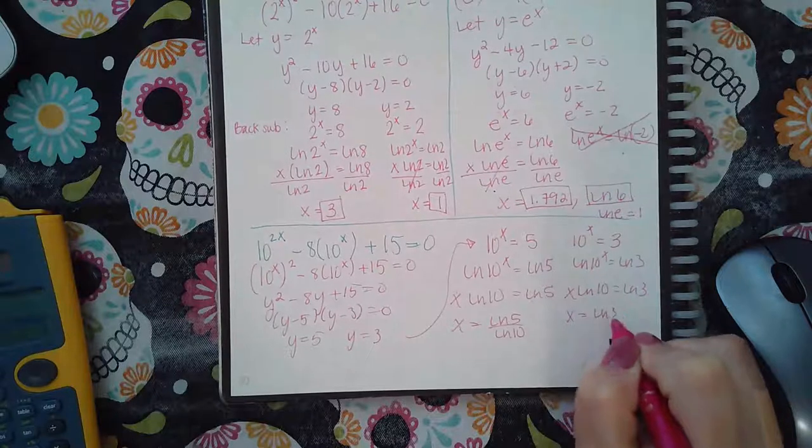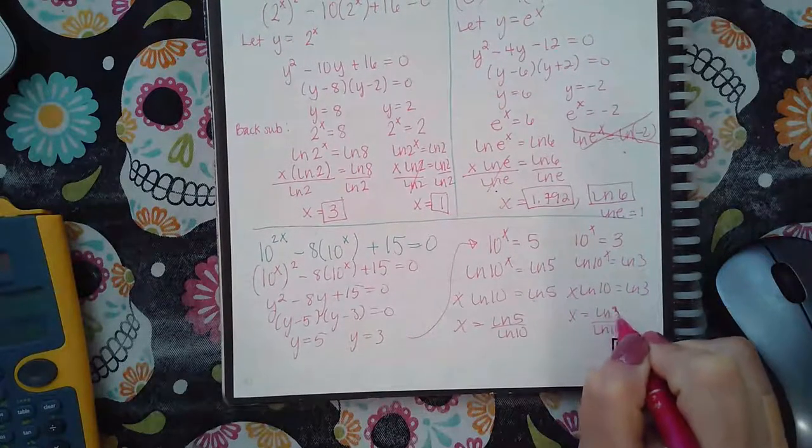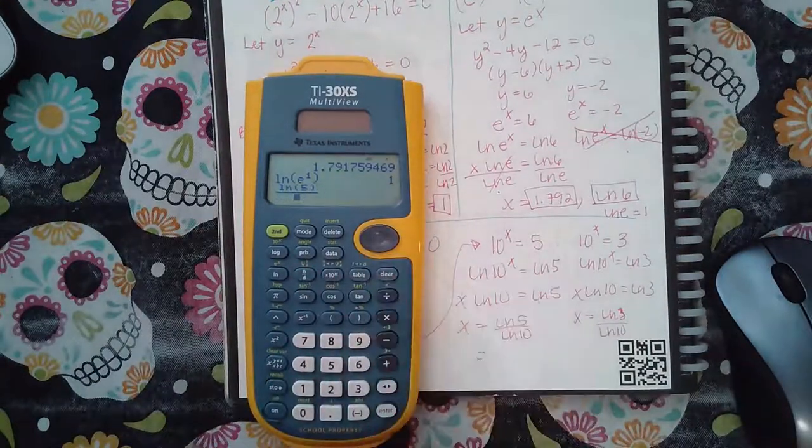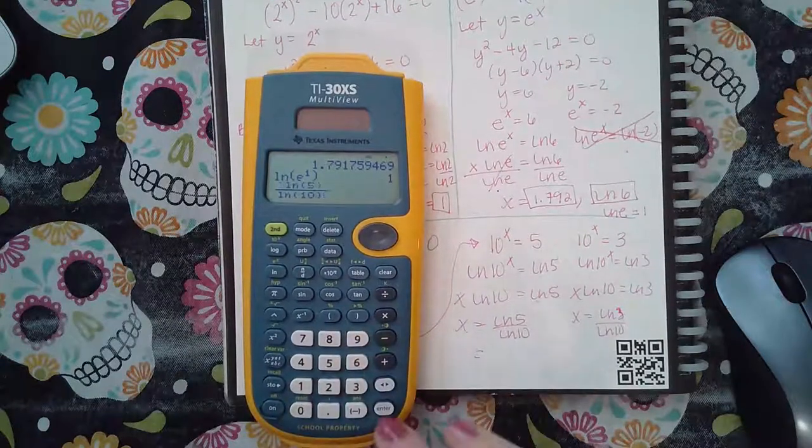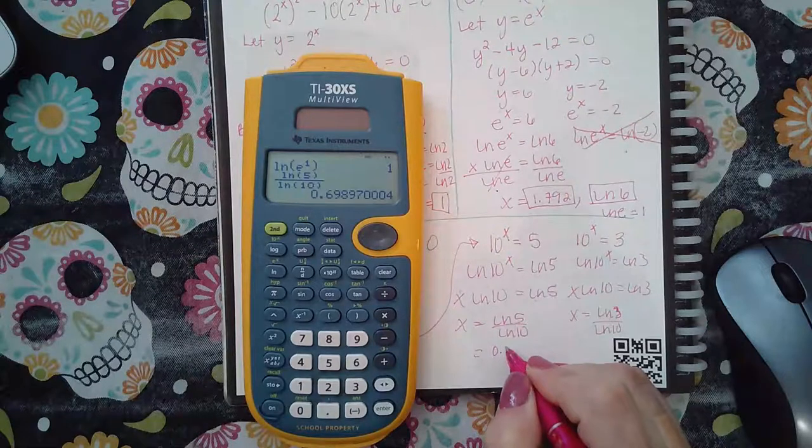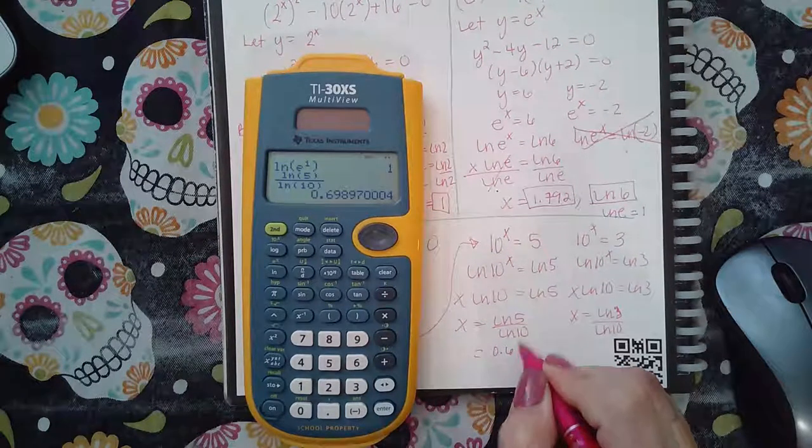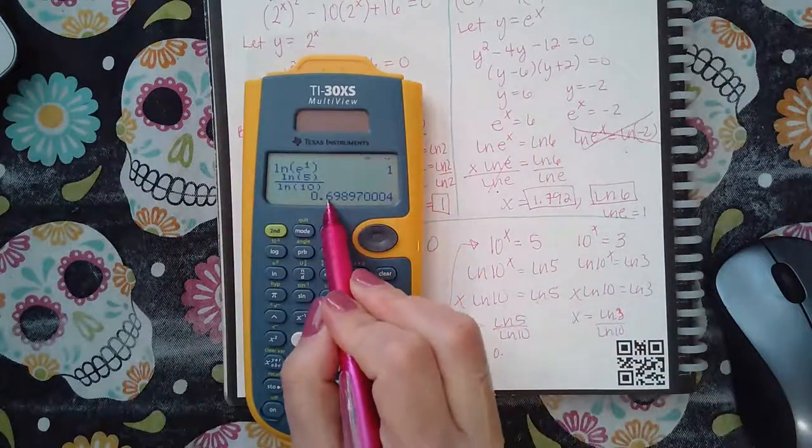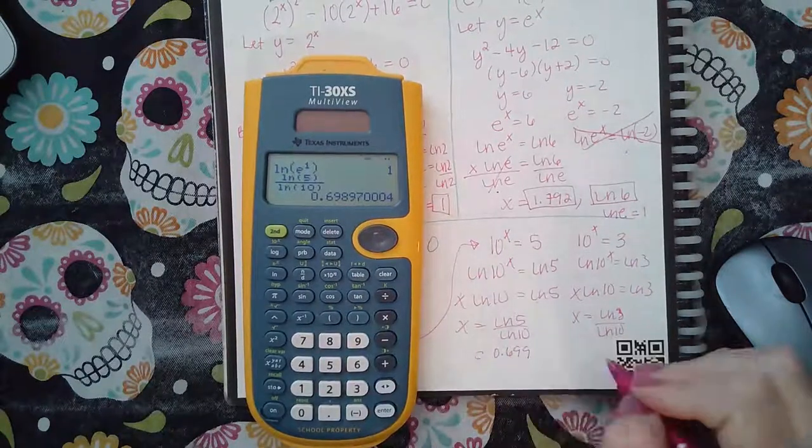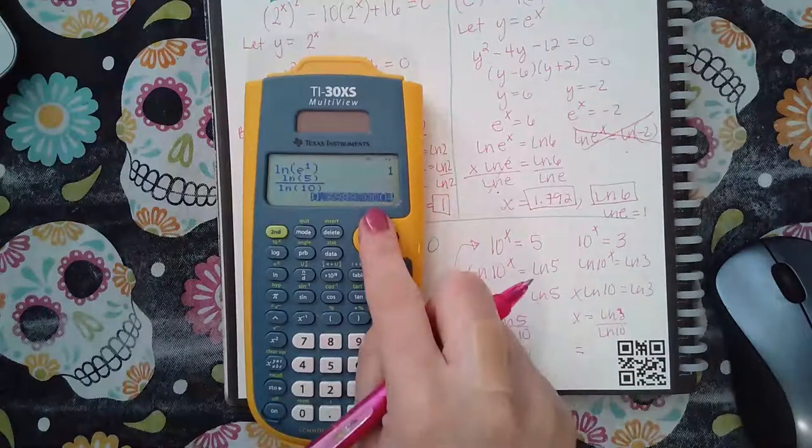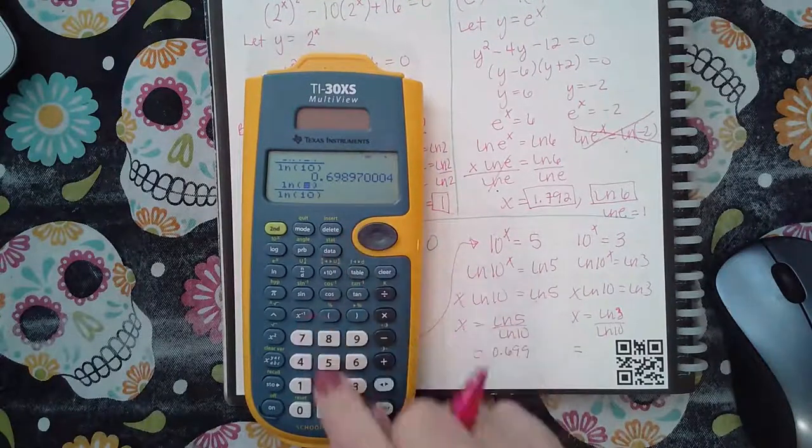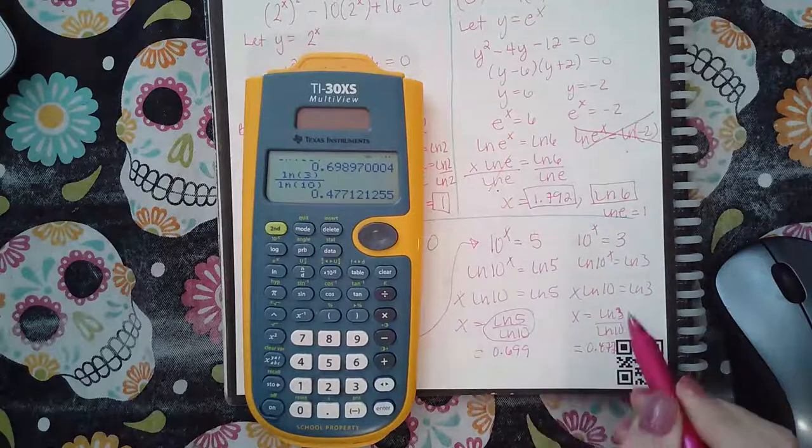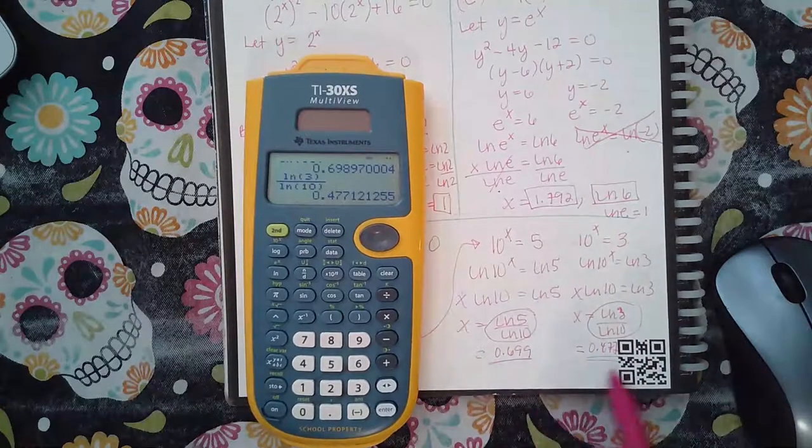So you get x equals ln of 5 over ln of 10, and x equals ln of 3 over ln of 10 over here. If they want the exact answers, you can give them those. If they do take the decimals or tells you to round, then they want the decimals. And then you can give them whatever the decimals are. So 0.699, and over here we get ln of 3 over ln of 10, which is 0.477. So again, if they want the exact answers, give them the fractions. If they want the decimals, there's your decimals.